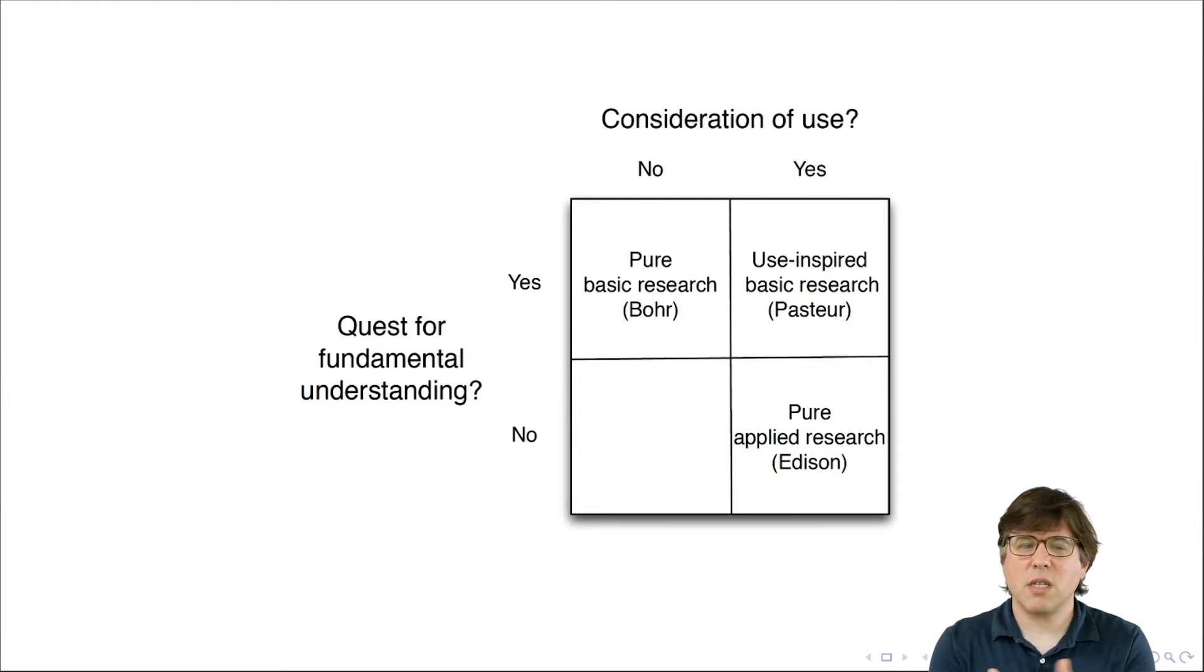And so for this reason, Donald Stokes proposes this two dimensional schematic. There is work that seeks fundamental understanding and there's work that's motivated by use. And there's some work that is both motivated by use and seeks fundamental understanding. So this is Pasteur's quadrant here. This is really where we want to be.